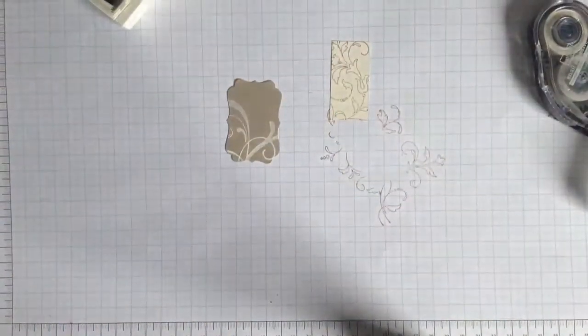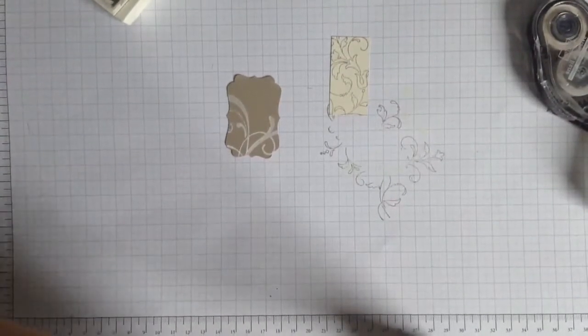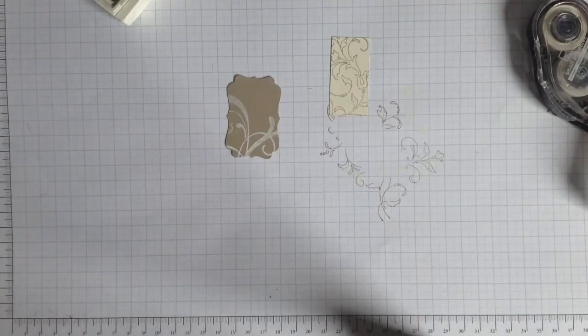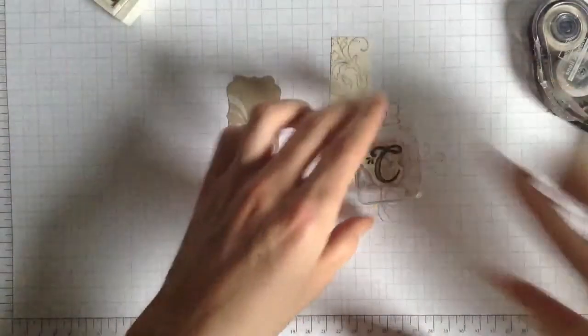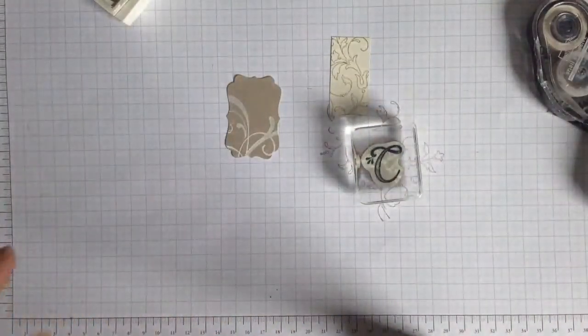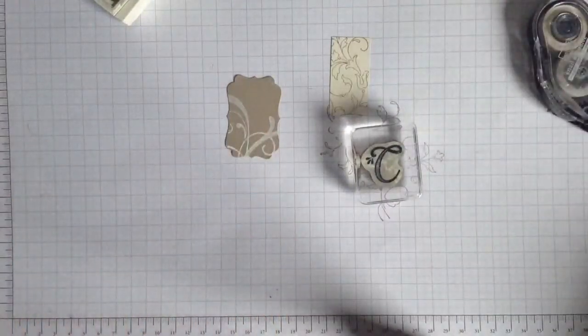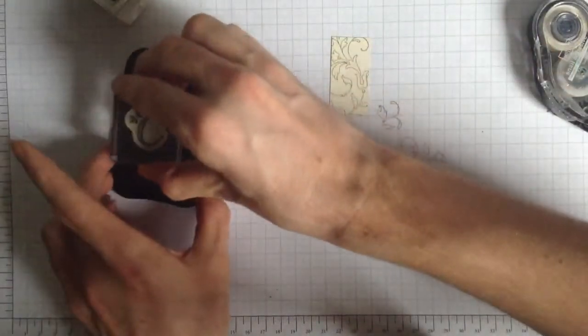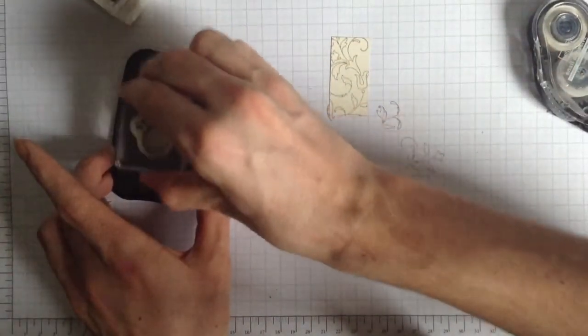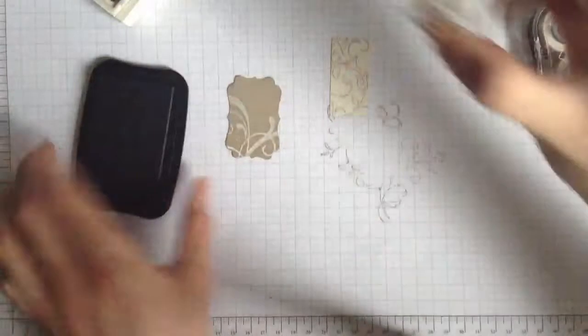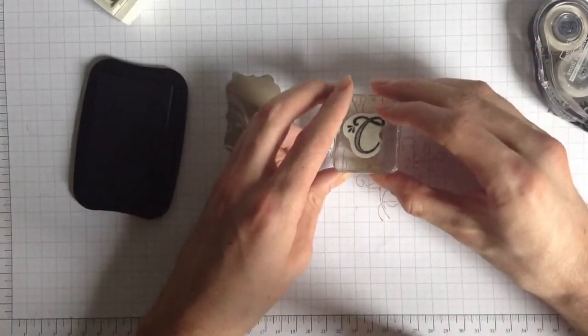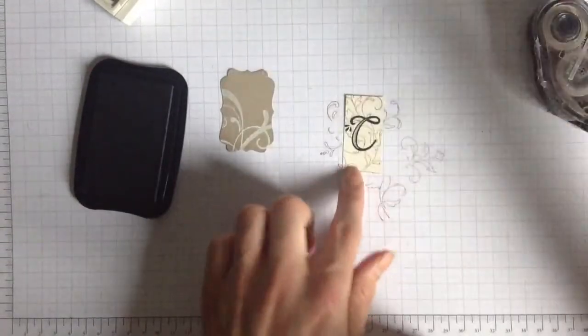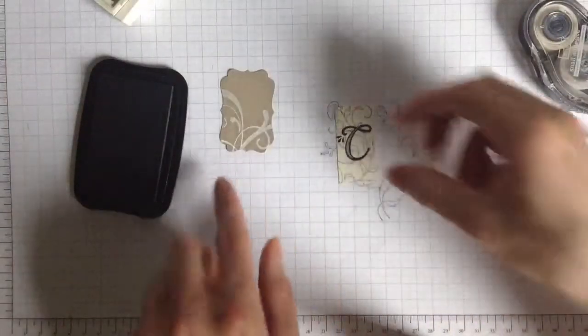Now where have I put the initials? Oh I knew I would lose something. Oh there it is. Now because my hostess is called Carol, Carol if you're watching, hello, I'm just going to stamp her initial C in Stazon Ink. Because I would like a nice dark crisp image. And I'm just going to stamp it in the center. Right there. And as you can see that's cut that.